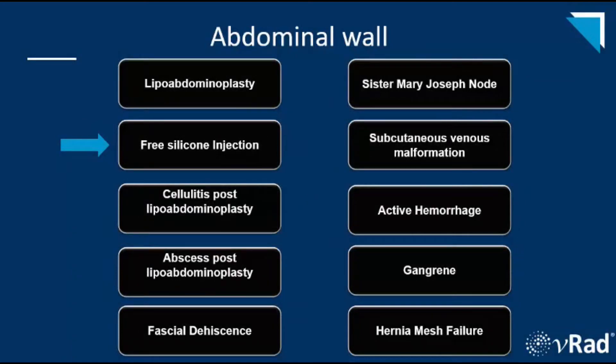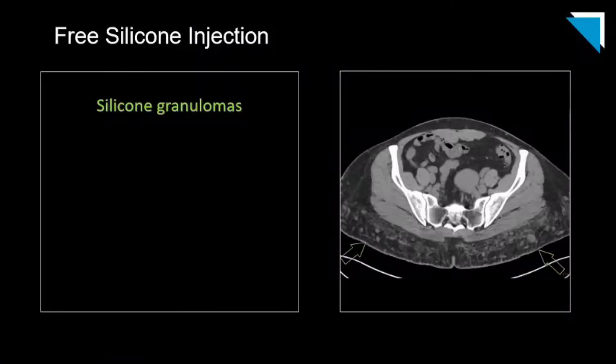Our next case is an example of free silicone injection. This axial image shows the typical postoperative appearance of liquid silicone injection. These multiple round densities in the gluteal soft tissues are silicone granulomas. Keep in mind these can calcify or be confluent. You can see these pretty much anywhere, but breasts and buttocks are the most common. Also note the midline crowding of the rectus abdominal muscles signaling a prior abdominoplasty.